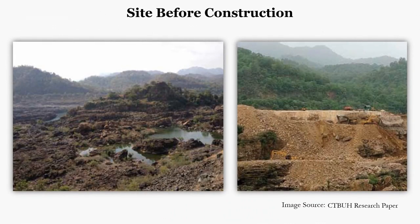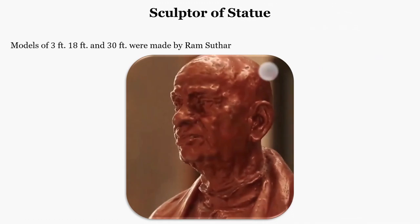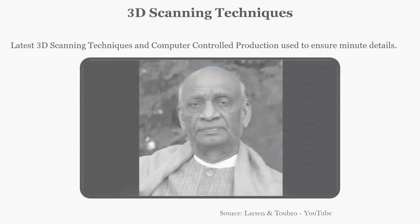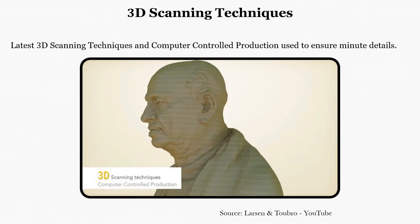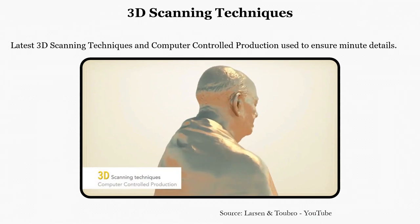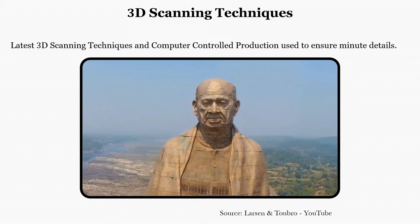The artist Ram Visutar was hired — an awardee of the Padma Shri and Padma Bhushan for his work in the field of art. He creates sculptors of varying sizes, holding every minute detail, because the final look of the statue was made by sifting through thousands of photographs of Sardar Patel. After that, latest 3D scanning techniques and computer-controlled production were used to ensure accurate reproduction of every minute detail for the bronze cladding of the statue.